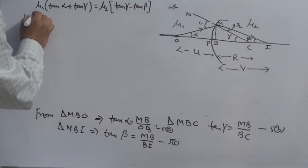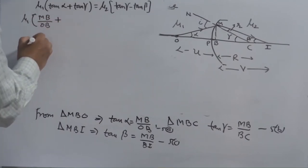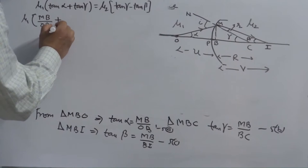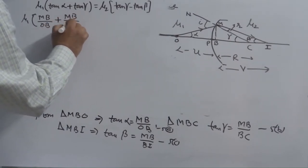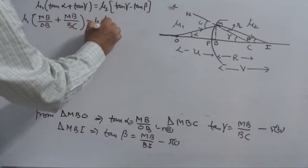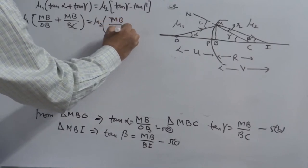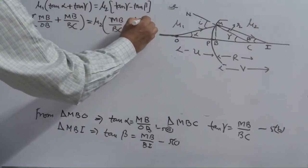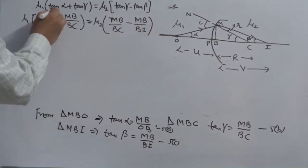Mu 1, tan alpha is M, B over O, B plus this is tan gamma, M, B over B, C. Mu 2, M, B over B, C minus M, B over B, I. M, B, M, B gets cancelled.